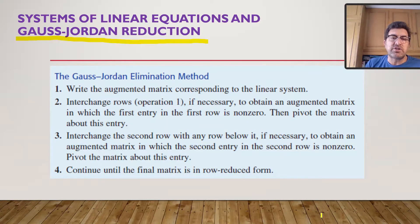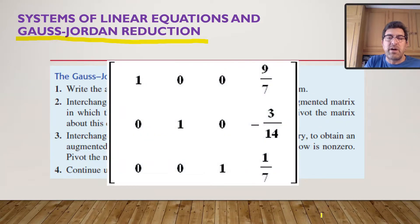If we interchange after that the second row or the row below, if necessary, so we work on our operations to obtain an augmented matrix in which the second entry in the second row is non-zero. So the pivot the matrix about this entry until you have the second entry is one. You continue until the final matrix is in row-reduced form.